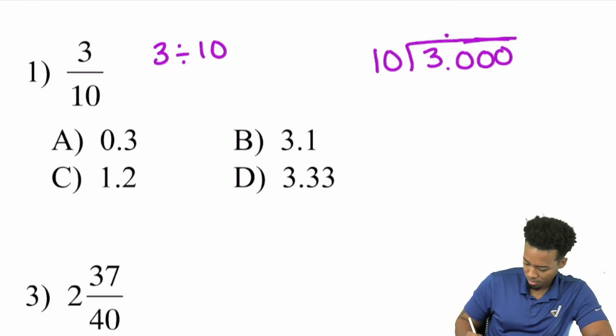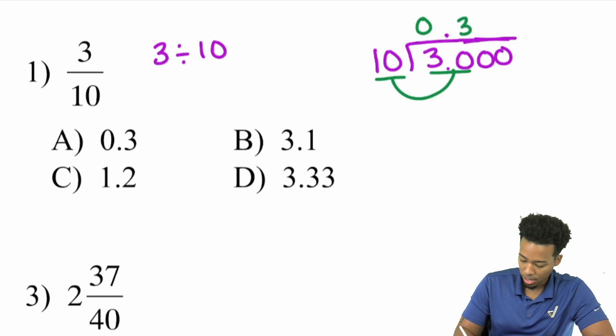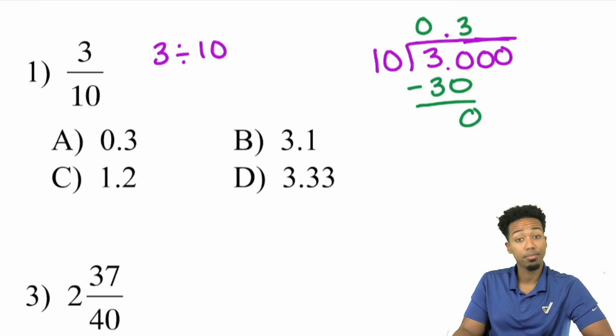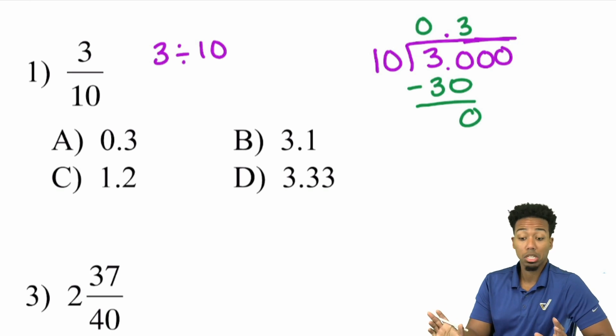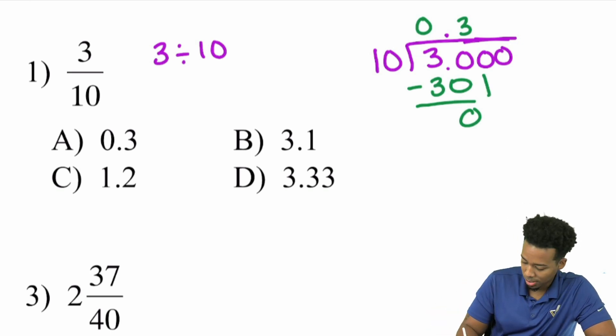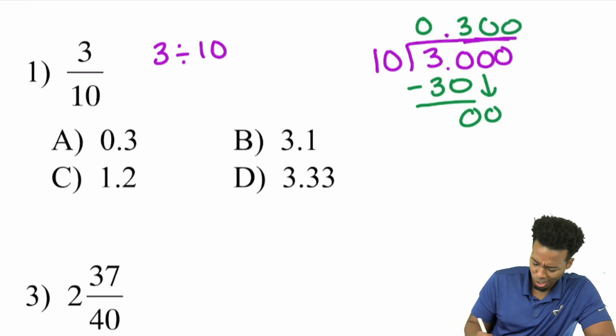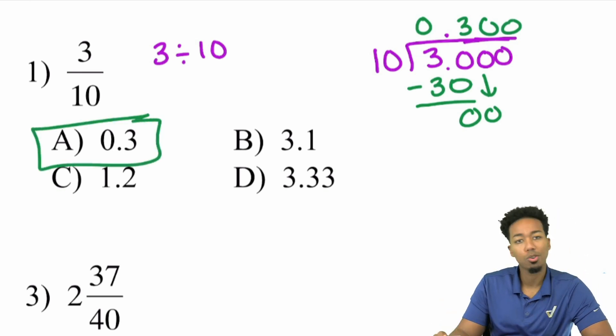So here we know that 10 cannot go into three, but can 10 go into 30? Yeah, 10 can go into 30. And let me make sure I put the decimal in the same place that it belongs. That's one of the biggest mistakes that people make. They forget to use that decimal and put it where it was before. But 10 can go into 30, and that's three times right there. And so what we'll do is we'll do three times 10. That's 30. Subtract that. And you get zero. That's it. You're done. So it's 0.3. That's exactly how you convert a fraction into a decimal here.